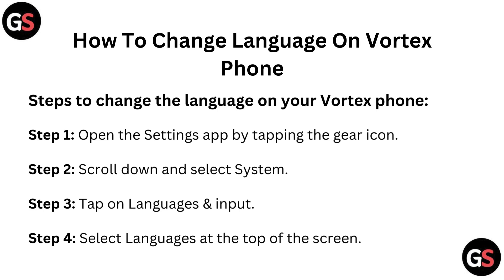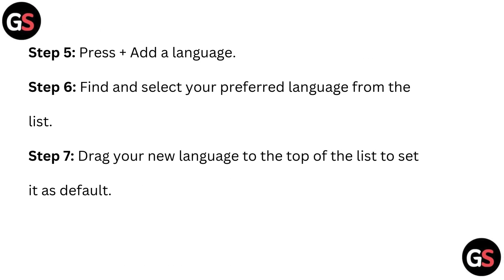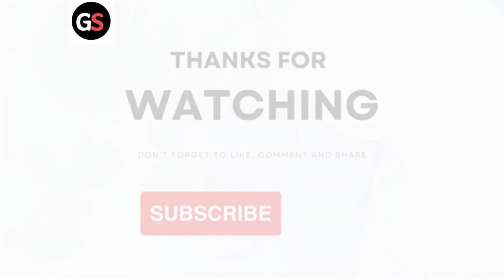Step 4: Select languages at the top of the screen. Step 5: Press add a language. Step 6: Find and select your preferred language from the list. Step 7: Drag your new language to the top of the list to set it as default.